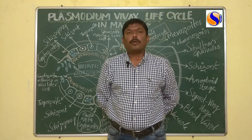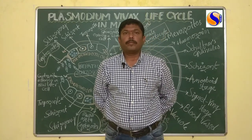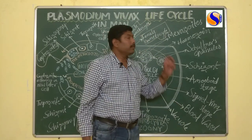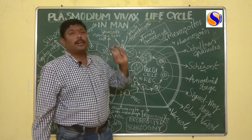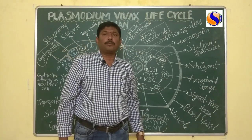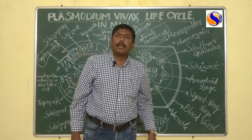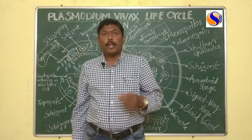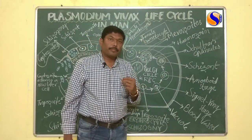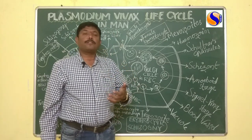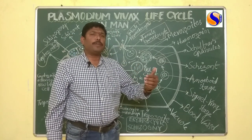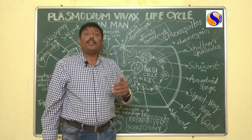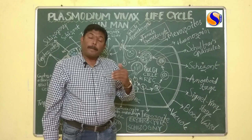Now I am discussing about the life cycle of Plasmodium vivax. If you take the life cycle of Plasmodium vivax, it completes its life cycle in two hosts. The primary host is the female Anopheles mosquito, whereas the secondary host is man.